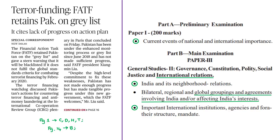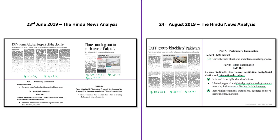The next news article discussion is based on the Financial Action Task Force and the gray listing of Pakistan. Today's news is that the FATF has retained Pakistan on the gray list and given a strict warning that Pakistan will be blacklisted if it does not fulfill global standards criteria for combating terror financing by February 2020. The details on FATF, gray listing and blacklisting, why Pakistan is gray listed, and what happens if it is blacklisted have been discussed in earlier sessions on 23rd June and 24th August. The links are given in the description box and comment section.